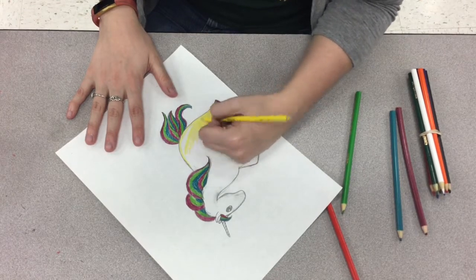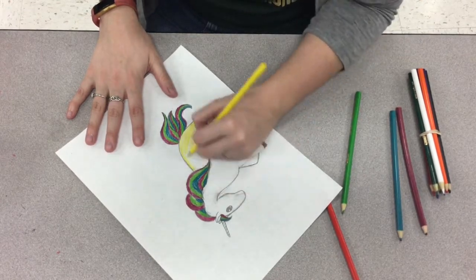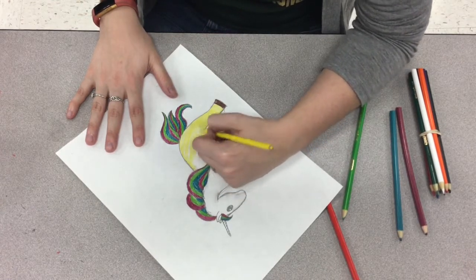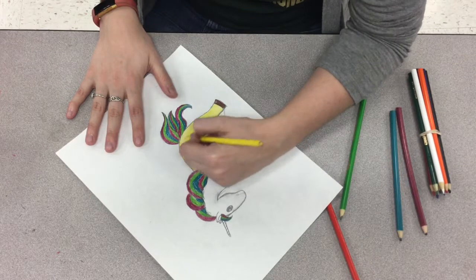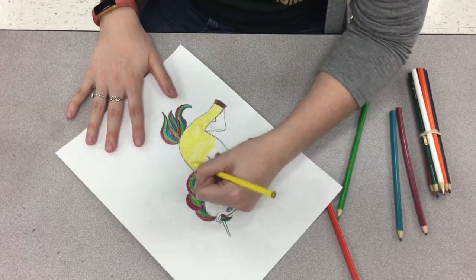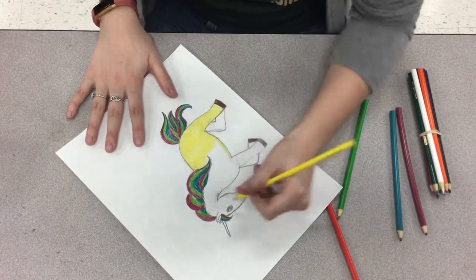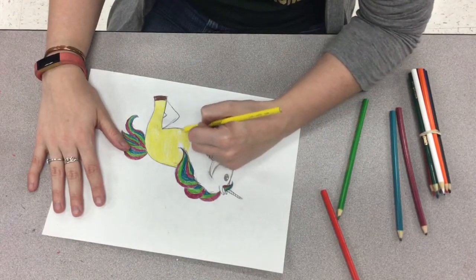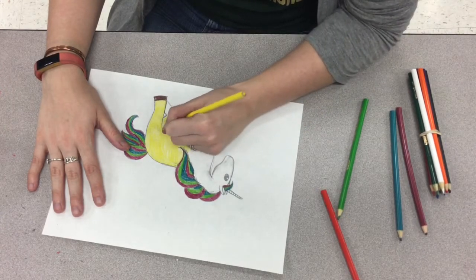Remember, coloring with colored pencils, direction is super important. So you can see that I'm using a curved line to color the body of the unicorn. That helps it show that it's more three-dimensional. And I'm coloring all in the same direction.